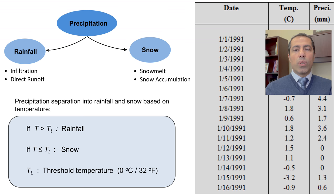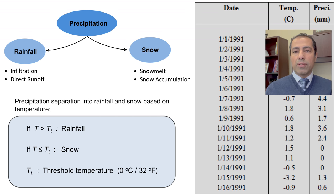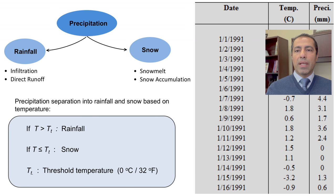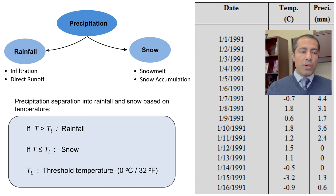We have to make an assumption for decomposing precipitation to rainfall and snow. One very common assumption is: if temperature is below or equal to the freezing level, the entire precipitation falls as snow; if temperature is above, the entire precipitation falls as rainfall. This is a strong assumption — in reality we can have rainfall below freezing or snow above freezing — but it allows us to simply decompose precipitation into rainfall and snow. We call the freezing level our temperature threshold, TT, and we assume it to be 0°C or 32°F.